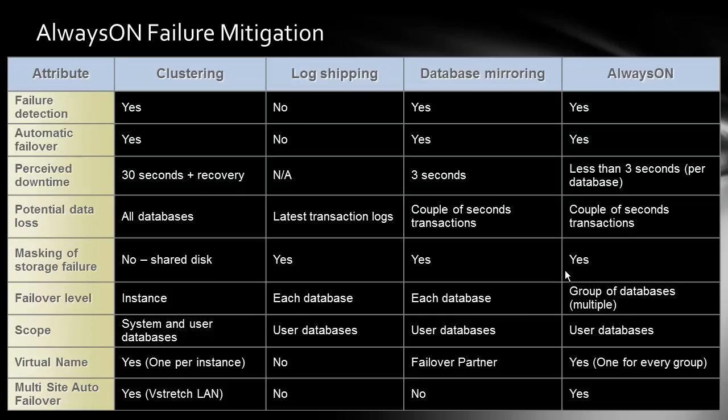Potential data loss is where there is a big difference. In clustering, shared storage is a possible single point of failure and you might lose all databases. In log shipping you lose the latest transaction logs. In mirroring with synchronous mode you don't lose any data, while in asynchronous you can lose a couple of seconds of transactions. For masking of storage failures, clustering uses a shared disk, log shipping has its own copy on separate disks, and database mirroring as well as Always On both provide storage masking.